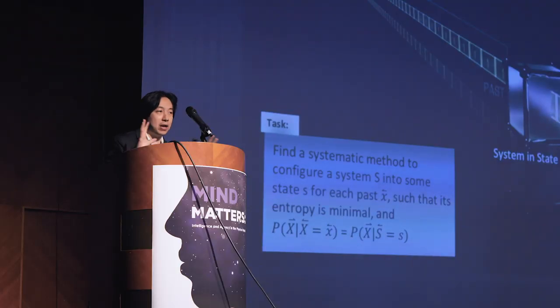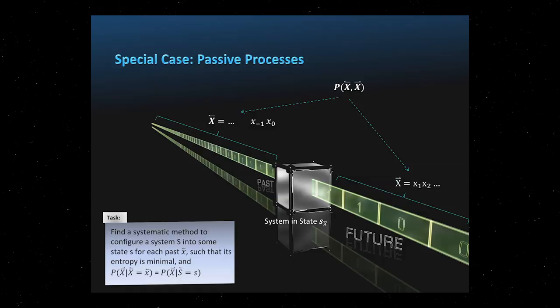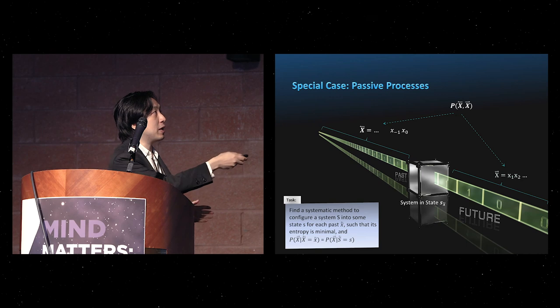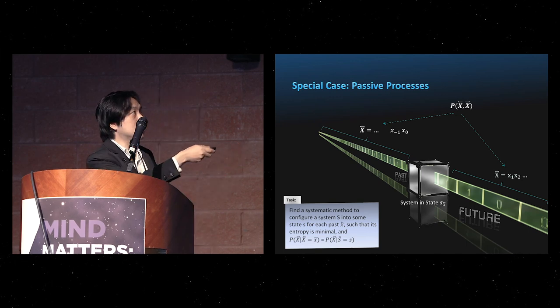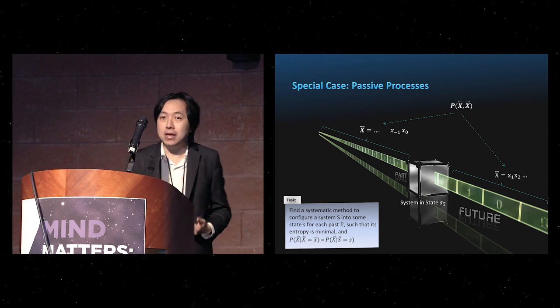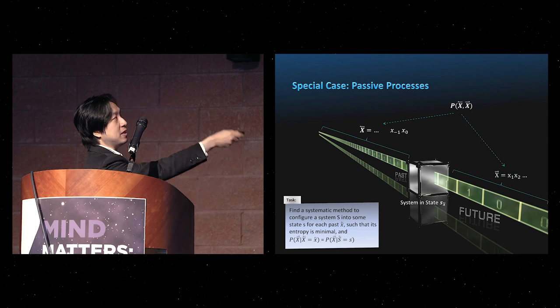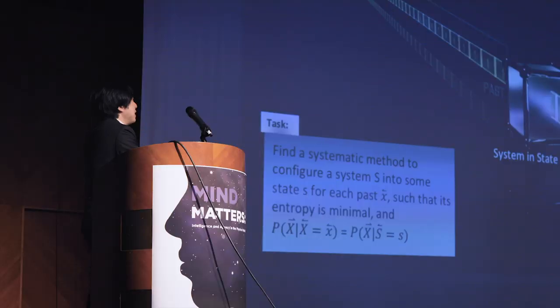Let's look at a special case as a warm-up: passive processes, from the perspective of a passive observer who just looks at the environment but does not actively interact with it. Observations can be treated as random variables, and in the simplest scenario we can think about an agent observing the environment at discrete pockets of time. We can build up the stochastic distribution where X_t is just the statistics of the observation at time t, described by a probability distribution that correlates past with future.